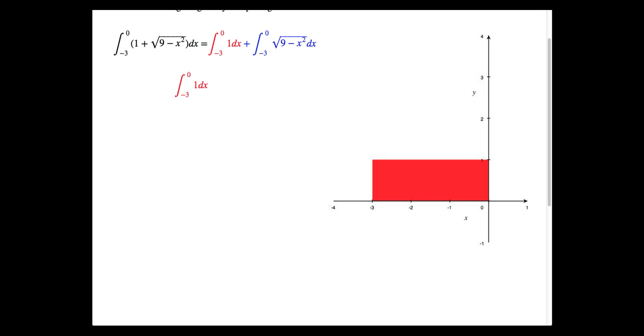We can remember from part a, the integral of 1dx is just the width times the height of 1. So this time we have a width of 3 and a height of 1, which gives us the area of 3.